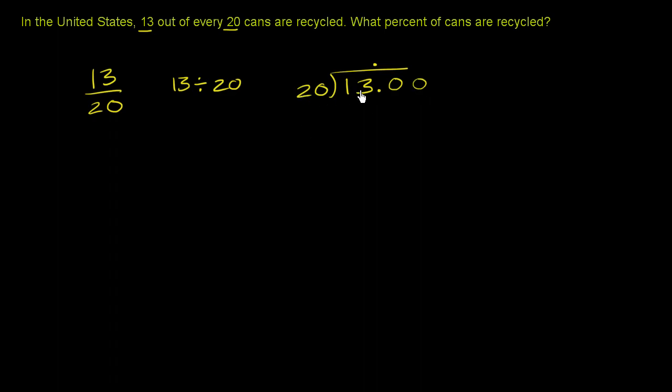20 goes into 13, 0 times. 0 times 20 is 0. And then 13 minus 0 is 13. Now you bring down a 0.